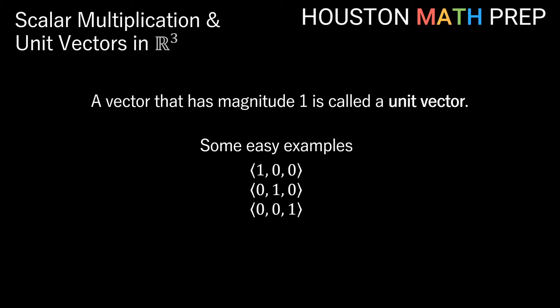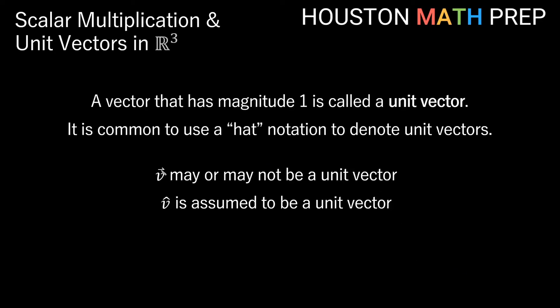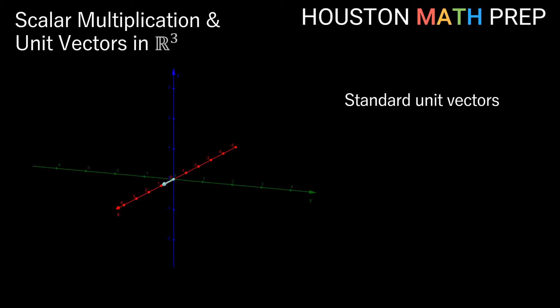If we want to specify that something is a unit vector, we have what's called hat notation for vectors. Normally to denote a vector we use arrow notation above the v. When we see that notation, we know v is a vector but we don't know its length. By placing this pointy hat notation above the v, it gives us extra information — not only is v a vector, but we know right off the bat that it's one unit long.